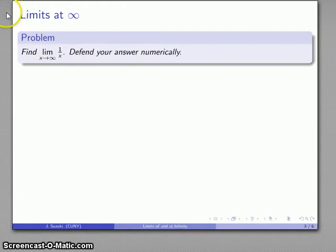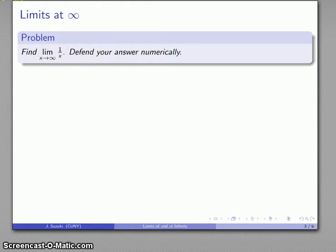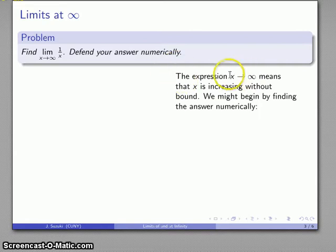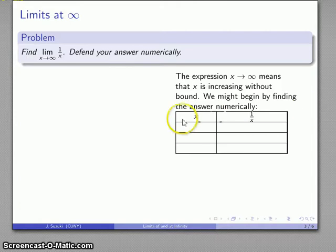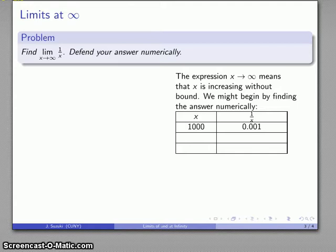Let's look at a problem. I want to find the limit as x goes to infinity of 1/x — what happens to 1/x as x gets larger and larger without bound? We'll defend our answer using a numerical approach. x going to infinity means x is increasing without bound. Let's start a table of values: at x = 1000, one over x equals 0.001.